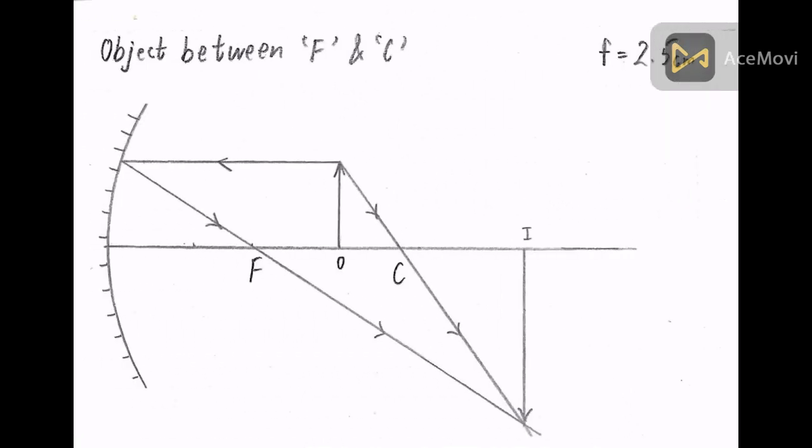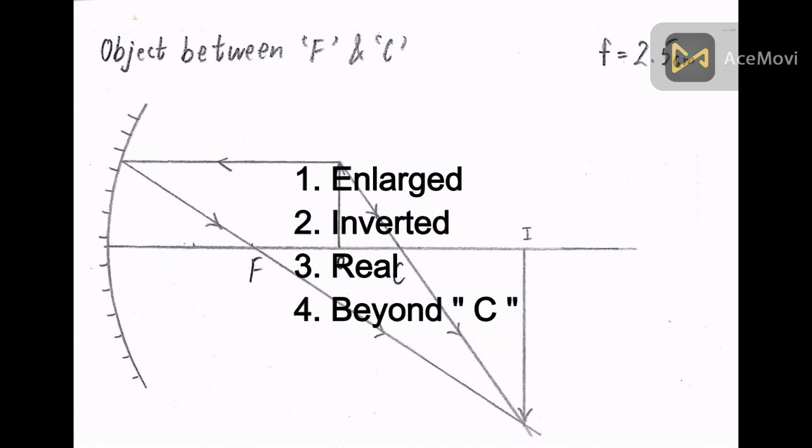When the object is placed between f and c, the position of the image is beyond c. It is enlarged, inverted, and real.